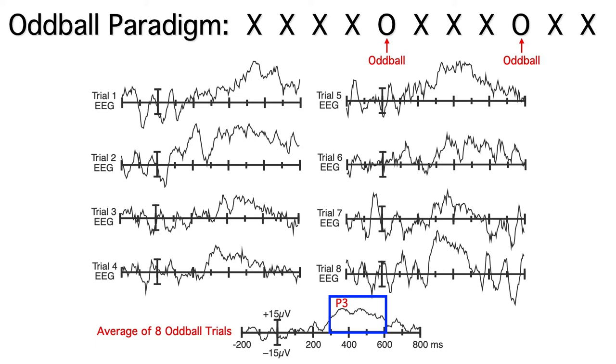In this particular example, the P3 is huge, about 25 microvolts. It's way bigger than the noise in the pre-stimulus interval. But this is an unusual situation.